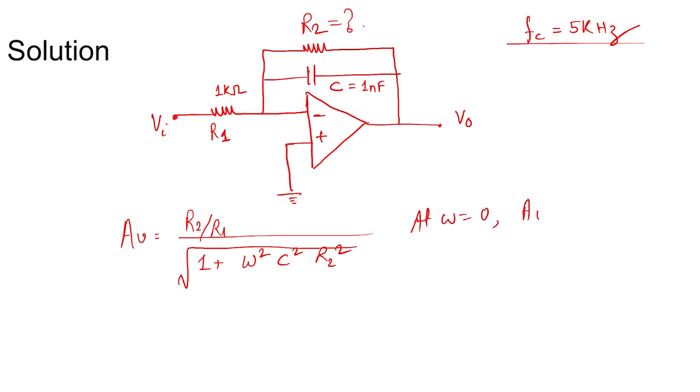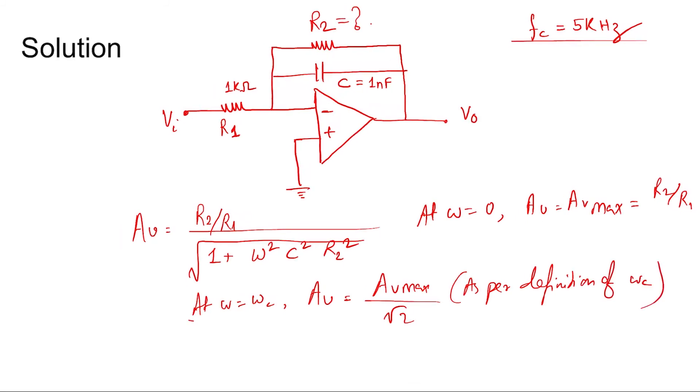At ω = 0, Av equals Av_max, which equals R2/R1. At ω = ωc (the cutoff frequency), the gain should be Av_max/√2, as per the definition of cutoff frequency. Now, at ω = ωc...